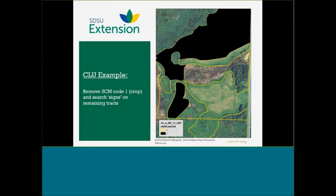With Common Land Unit data, the reason it's different is that it's mapped data — field edges, actually drawn data, not interpreted pixelated data. There can still be error, but it is mapped lines and mapped data units. What you see on screen is where we turned on the CLU data and applied a black shade to everything that was coded as crop ground.